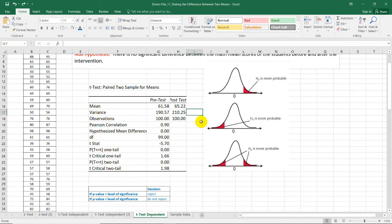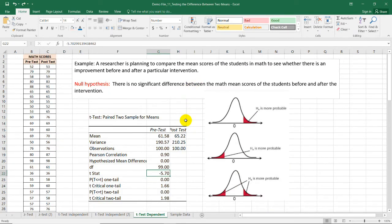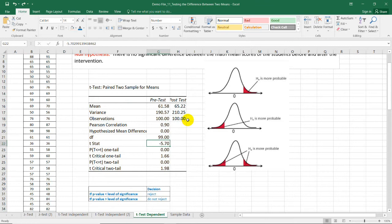To answer this question, let us look at our test value which is negative 5.70. In this example, I'm going to use the two-tailed type of test because I'm not really sure if the scores will increase or decrease after the post-test. By comparing the test value here and the critical value on the two-tailed test, we can see here that we have 1.98. But since our test value is negative, I'm going to use the negative value for this one which is negative 1.98.